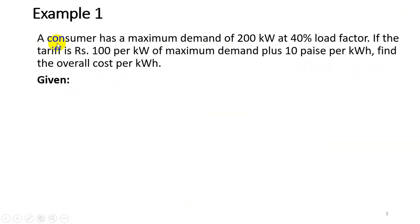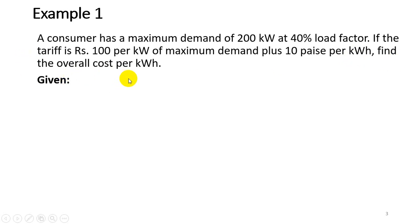The first problem: a consumer has a maximum demand of 200 kilowatts at 40% load factor. The tariff is rupees 100 per kilowatt of maximum demand plus 10 pies per kilowatt hour of energy. Find the overall cost per kilowatt hour.